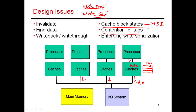Now let's look at write serialization. Suppose one processor wants to write the value 5 into A, and another processor simultaneously wants to write the value 7 into A. Both writes are cache misses and both want to go out on the bus. At a time, the bus can only carry one request. There is a centralized arbiter that grants the bus to one agent per cycle, using a round-robin or fairness mechanism. So one processor gets the bus first, places a request saying it's trying to do a write of A, everyone else invalidates, and it gets the block in modified state and writes 5.